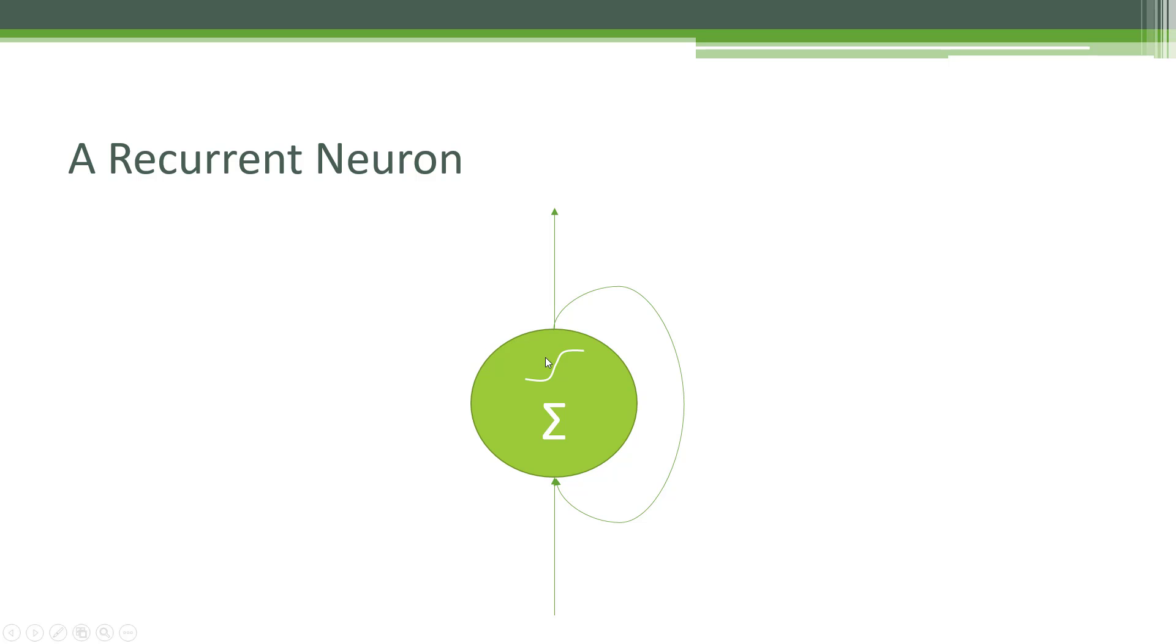Now, usually we would just output the result of that summation and that activation function as the output of this neuron, but we're also going to feed that back in to the same neuron. So the next time we run some data through this neuron, that data from the previous run also gets summed in to the results.